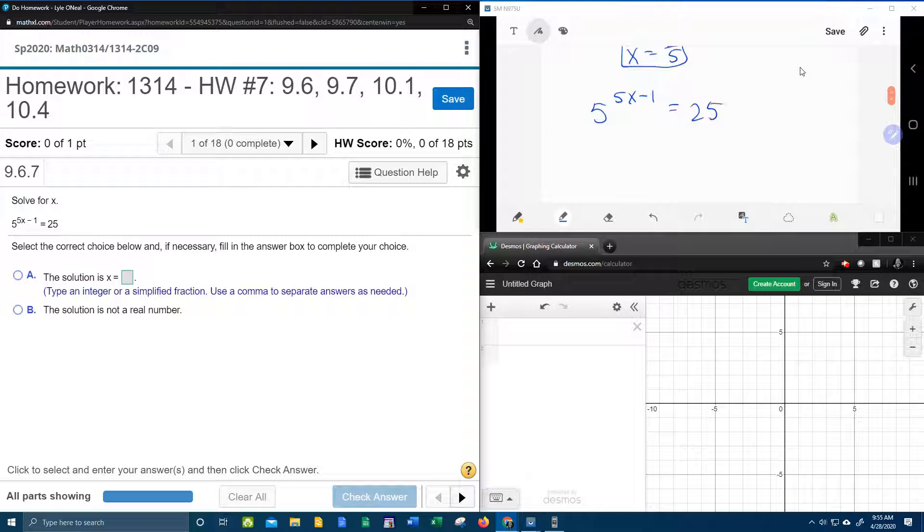This time we're going to use the technique of converting to logarithms. So we know if we have an exponential, we can convert to a log. We're going to bring the base down. That's going to make it log base 5.